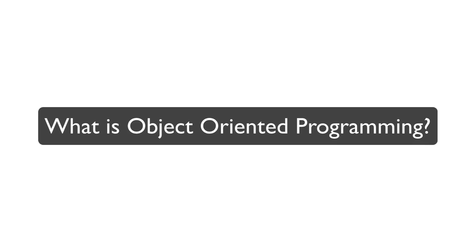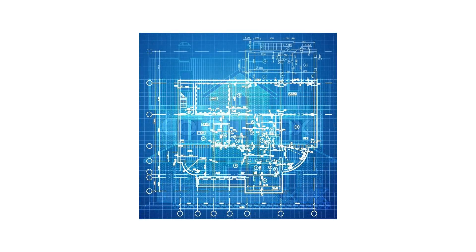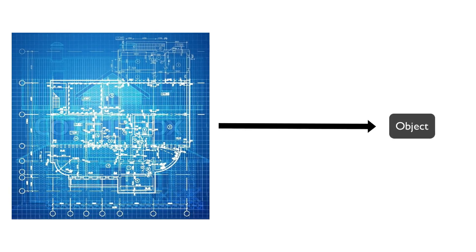Let's see what object-oriented programming is and how it works. We're going to start with classes. If you've tried to learn OOP or heard that term before, you also heard the term 'class,' because it all starts with a class. Classes are blueprints for creating objects. You model a class, define how you want it to look, then you create objects from that class and use those objects in your program or game.